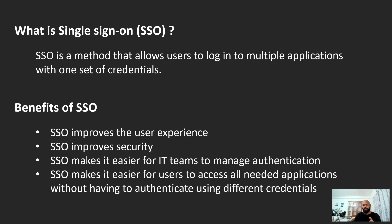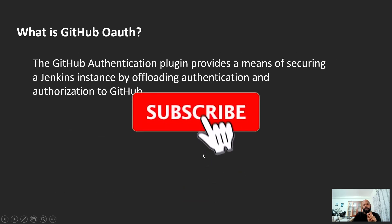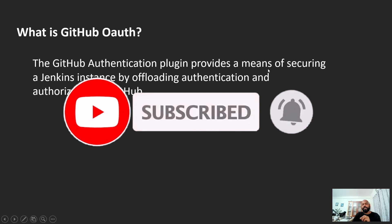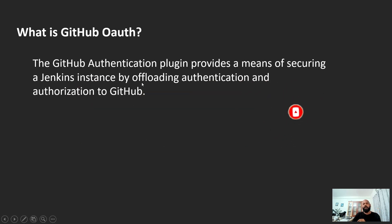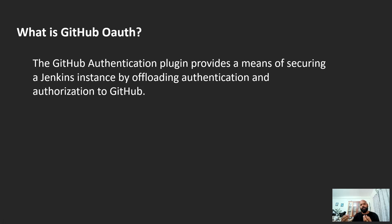Now let's understand what the GitHub Authentication plugin is. The GitHub Authentication plugin provides a means of securing a Jenkins instance by delegating authentication and authorization to GitHub. That means you don't need separate credentials for Jenkins — if you have a GitHub account, you can use your GitHub login to log into Jenkins. You just need to install this GitHub Authentication plugin in Jenkins and do the setup.